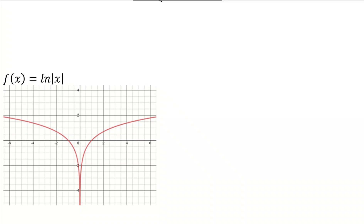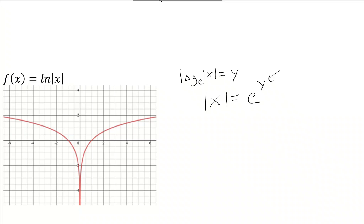It's kind of hard to tell based on the graph, but I assure you that this function is not defined for X equals 0. To justify that: ln of absolute value of X is really log base E of the absolute value of X. So here we have log base E of absolute value of X is equal to Y. Another way of expressing this is that the absolute value of X is equal to E to the Y. As you can see, if you plug in any value from negative infinity to infinity into Y, E to the Y is never going to equal 0. That justifies the fact that 0 is not in the domain of this function.